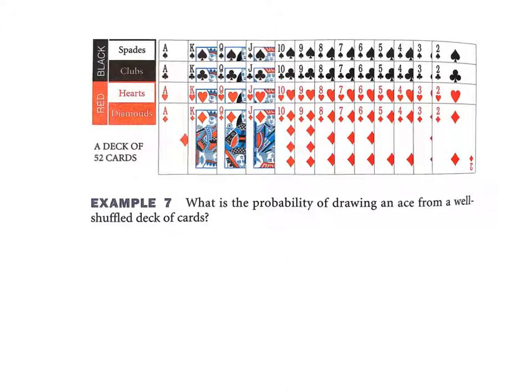Next one. What is the probability of drawing an ace from a well-shuffled deck of cards? If you don't know your cards very well, look at the aces. There are four aces. There are 52 cards, so it's four out of 52. Always reduce, and that reduces down to one over 13.